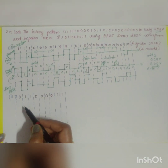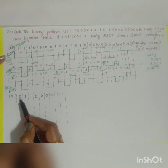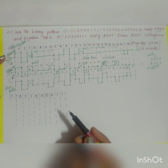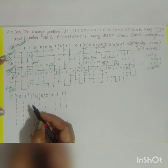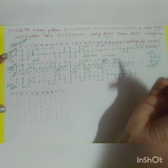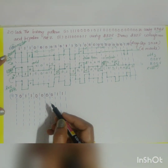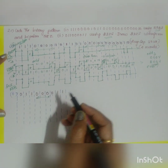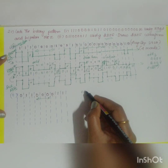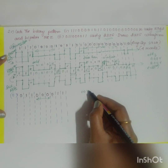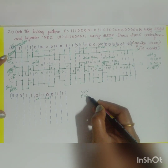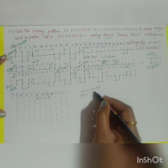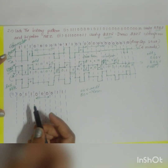Let us go for the second option: 0 1 1 0 0 0 0 0 1 1. You have to use B3ZS coding. The rule here is: three consecutive zeros are replaced by either 00V or B0V depending on whether the number of ones since the last violation is odd or even.